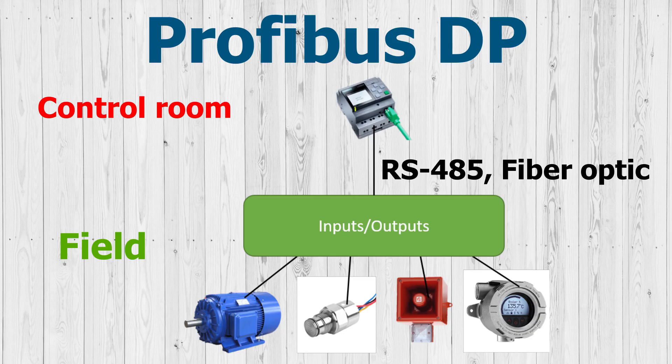Later, Profibus DP, or Decentralized Peripherals, was created to standardize industrial communication through a protocol capable of sending complex communications in a simple way, with a simpler configuration and faster messaging. The difference between Profibus DP and FMS is that with Profibus DP, the inputs and outputs — also called peripherals — of the instruments are not in the control room, but in the field; that is, they are decentralized, which reduces the necessary length of the cables to the instruments.